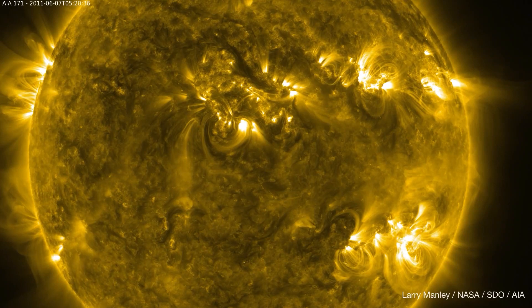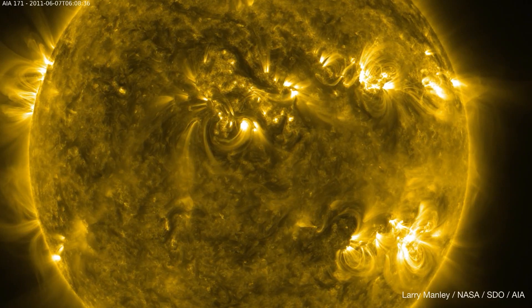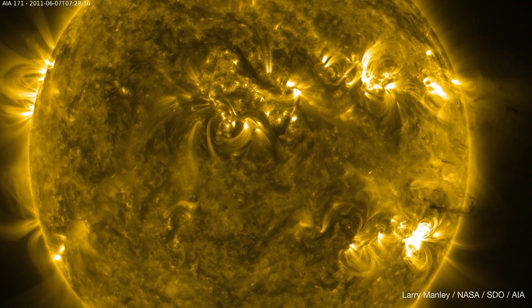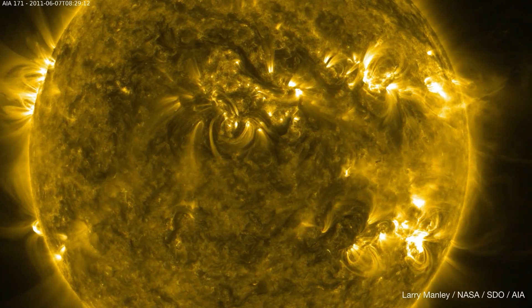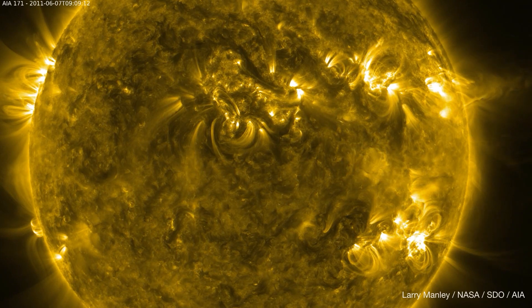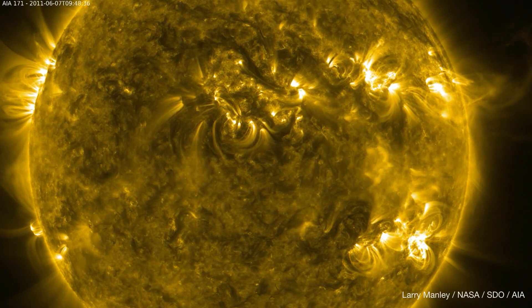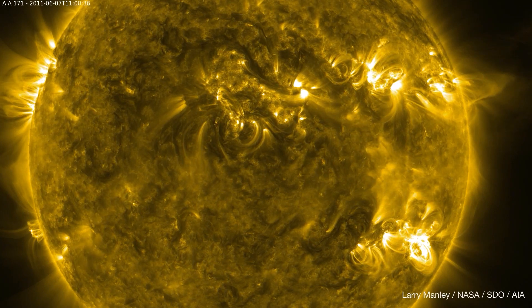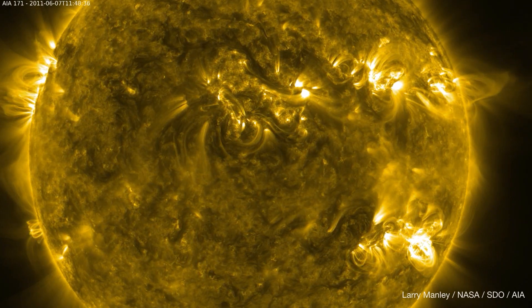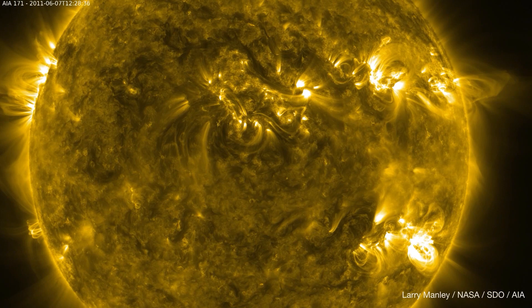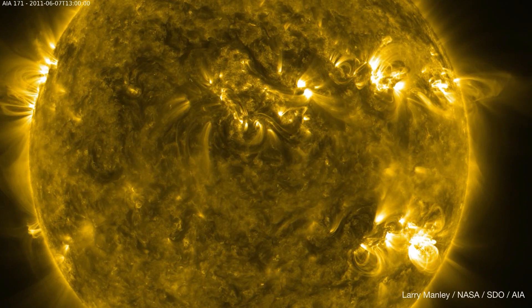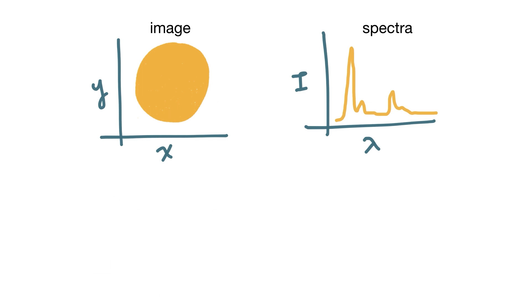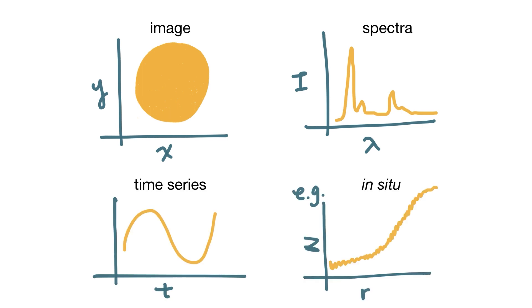So let's take a look at the Sun. These images were taken by a NASA satellite called the Solar Dynamics Observatory, and one pixel here is about the size of the San Francisco Bay Area. These are UV images, so they're in false color, and they're capturing plasma at temperatures of about a million degrees. These are the kind of data that solar physicists work with — image data, spectral data, time series data, and in-situ data.